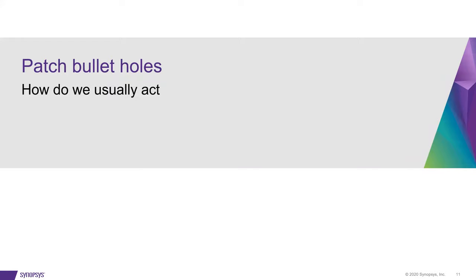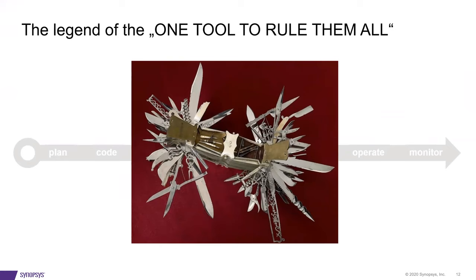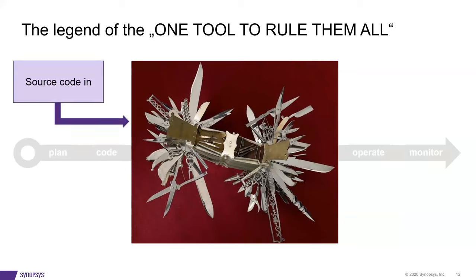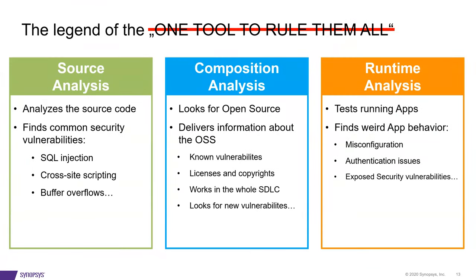We end up trying to patch bullet holes — we see there is a problem in the testing phase and we have to repair all the found vulnerabilities, patching only some bullet holes so that water doesn't leak. We then think about this legend of one tool to rule them all — the fantasy that we put source code in and out comes perfect software. Well, the reality is a little different. There is no tool to rule them all. There is no tool that can help you in every aspect of your work.